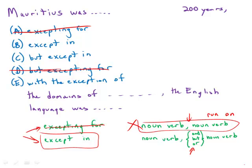Now notice here what we have is, we have noun and verb, Mauritius was. That's a bona fide independent clause with a subject and a verb.